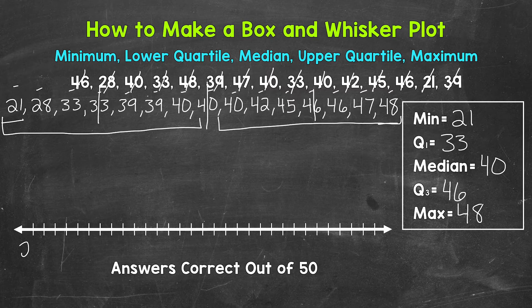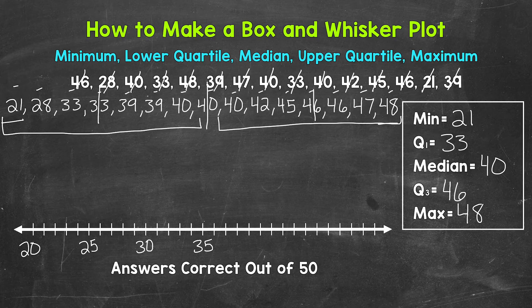So let's start with 20 here and count by fives — marking each value from 20 up to 45, covering all the numbers we need on our number line.